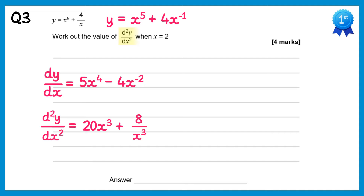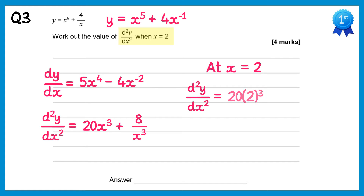Now we need to find the value when x equals 2, so we substitute 2 in. At x equals 2, d²y/dx² equals 20 times 2³ plus 8 over 2³. Now 2³ is 8, so 20 times 8 is 160 and 8 divided by 8 is 1. So we get 160 plus 1, which is 161.